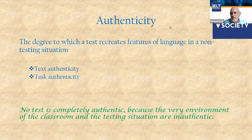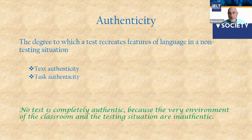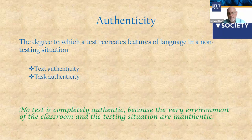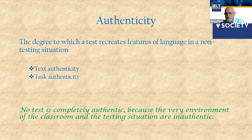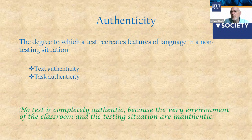We want to think about two kinds of authenticity. First, text authenticity — how much authenticity is in the listening or reading texts. Then task authenticity — how authentic are the tasks where students need to produce language in speaking or writing. And let's remember that no test is completely authentic, because the test itself is not an authentic situation.